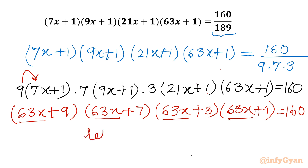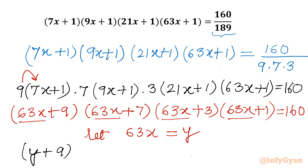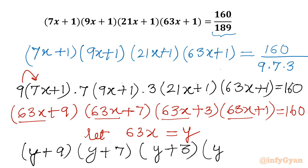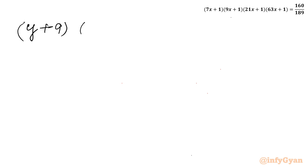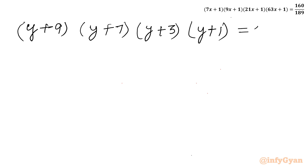So let us call 63x equal to y. Then our equation becomes: (y+9)(y+7)(y+3)(y+1) = 160.